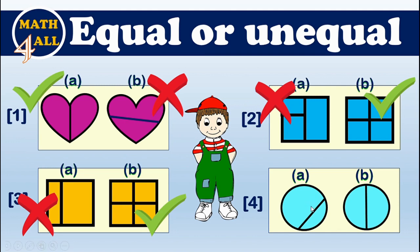It's your turn again! Answer number four: the first shape is broken into unequal parts because this part isn't equal to this part, so it's not a fraction. The second shape is broken into equal parts because this part is equal to this part, so it's a fraction. Excellent! And this was our lesson — thank you!